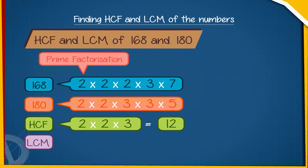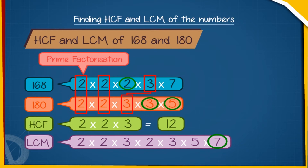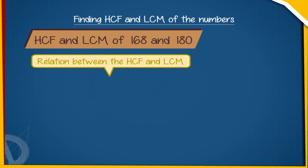The LCM is computed using all common prime factors and the remaining factors from both numbers: 2 × 2 × 2 × 3 × 3 × 5 × 7 = 2520. We can say that the LCM is the product of all the common prime factors and the remaining factors appearing in both numbers.